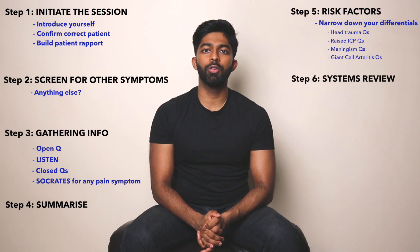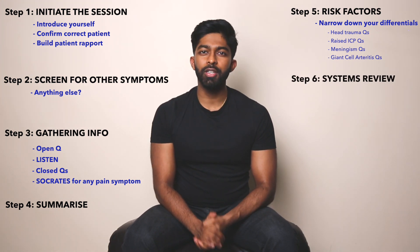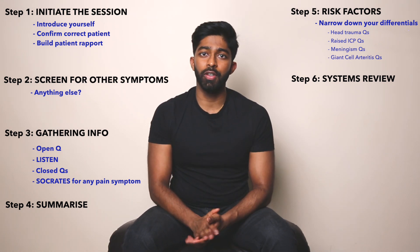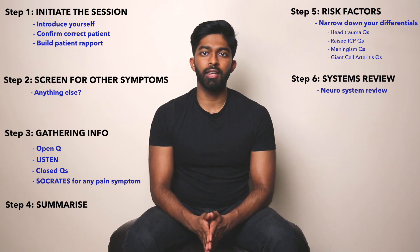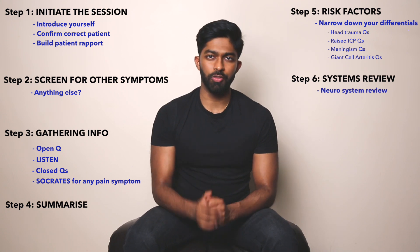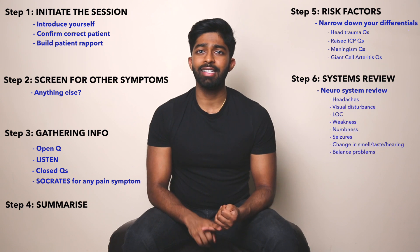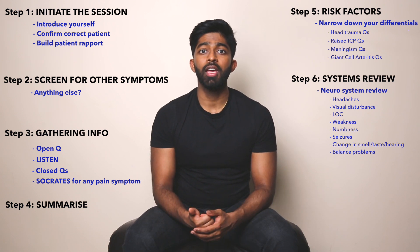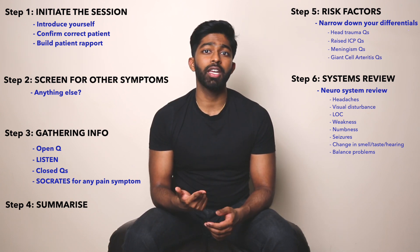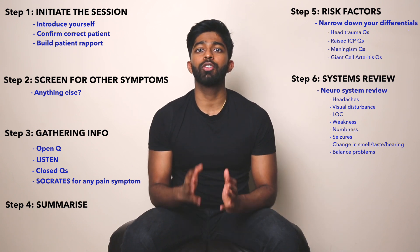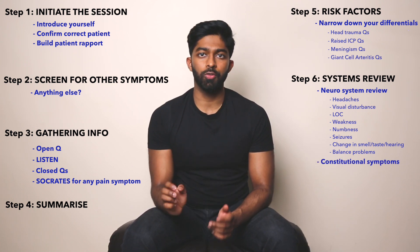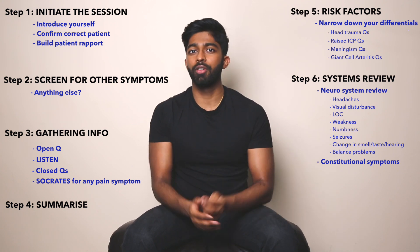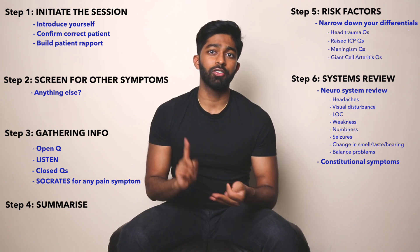On to step six, which is your systems review. This is where you do a very body system focused review of symptoms to make sure you haven't missed anything. For a neurological systems review, I like to say: 'I've got a few specific questions to ask in a row now. Have you noticed any headaches, any visual disturbances, any loss of consciousness, any weakness, any numbness, any fits or seizures, any change in your smell, taste, or hearing, and any balance problems?' It's also helpful at the end of your systems review to ask about constitutional symptoms — fever, weight loss, tiredness, and loss of appetite.